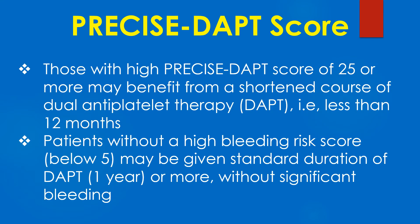Those with a high PRECISE DAPT score of 25 or more may benefit from a shortened course of dual antiplatelet therapy of less than 12 months. Patients without a high bleeding score, i.e. below 25, may be given standard duration of DAPT of one year or more without significant bleeding.